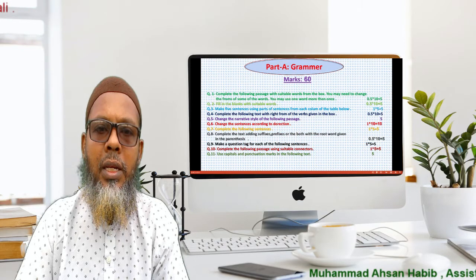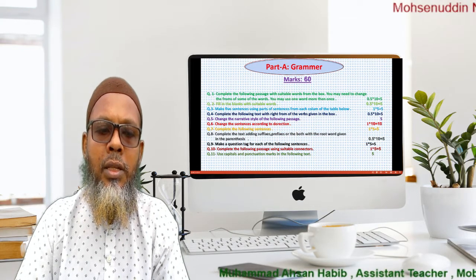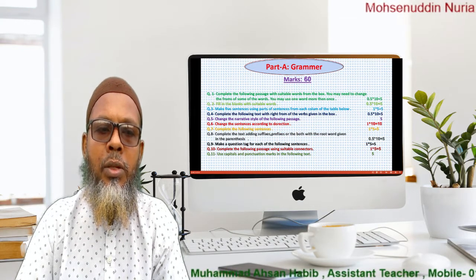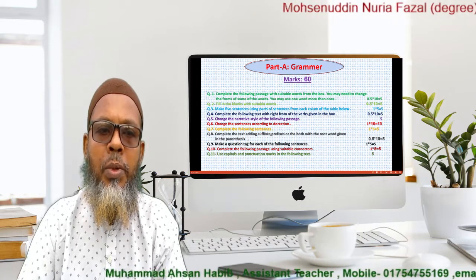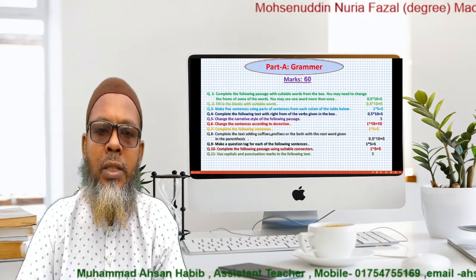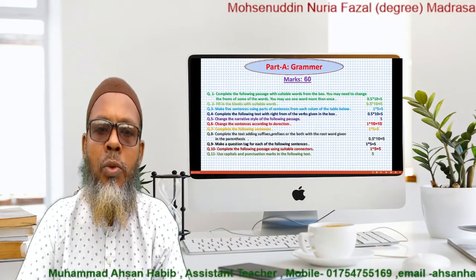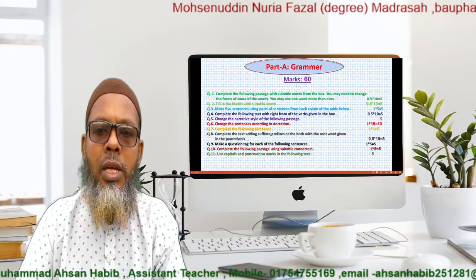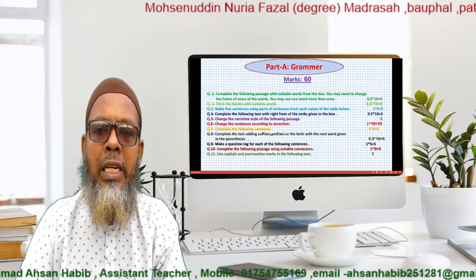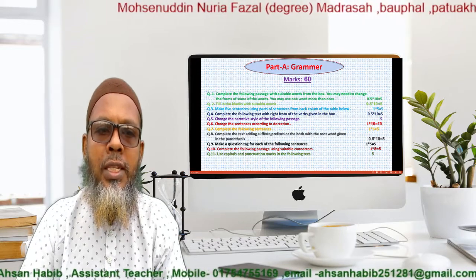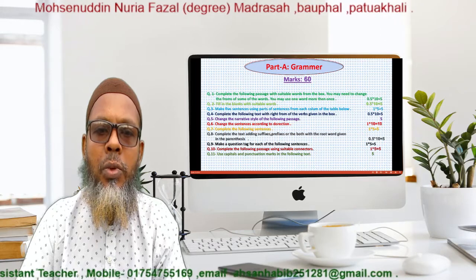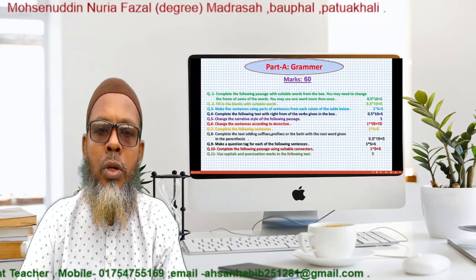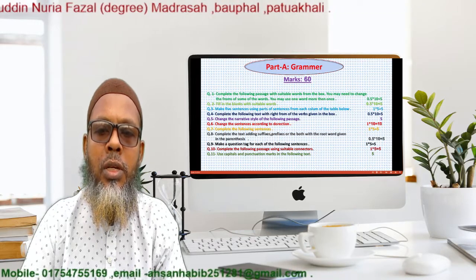Part A Grammar, 60 marks. There are 11 questions. Question 1: Complete the following passage with suitable words from the given words. You may need to change the form of some of the words. You may use one word more than once.